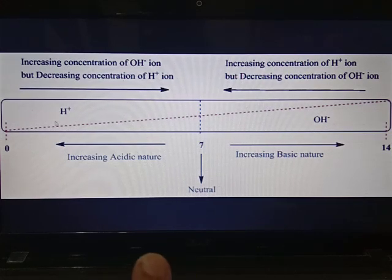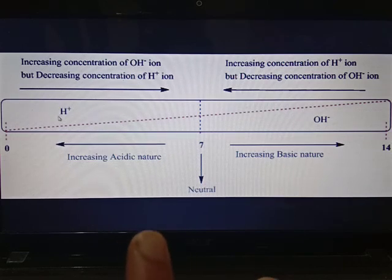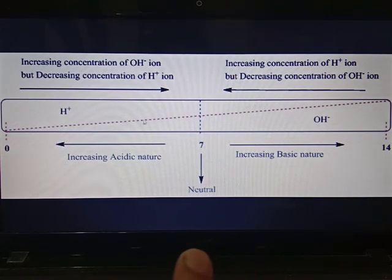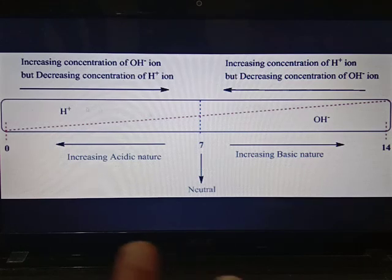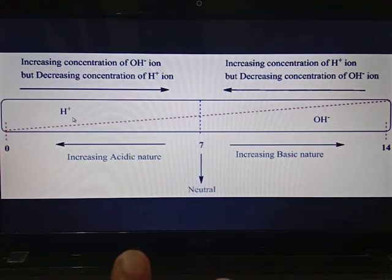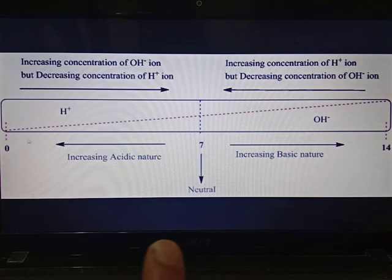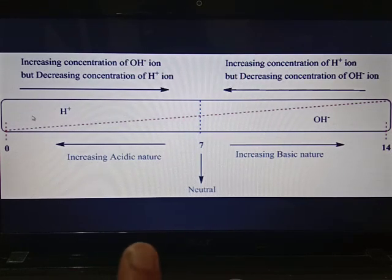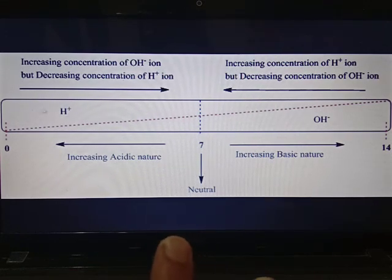The pH is inversely proportional to the concentration of H+ ions. If the pH increases, the H+ ion concentration decreases. And as the pH decreases, H+ ion concentration increases. Those acids which have low pH are strong acids and have higher H+ ion concentration.